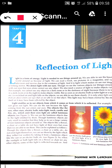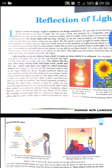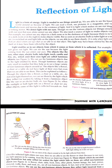But does every object need light to be seen? No, because some objects have their own light and some do not. On the basis of this, objects can be classified into two types: first is the luminous object and the second one is the non-luminous object. Objects which have their own light are known as luminous objects, and objects which do not emit their own light are known as non-luminous objects.